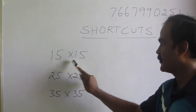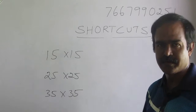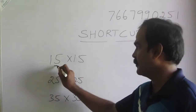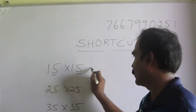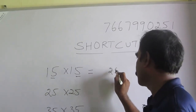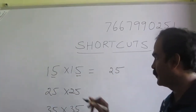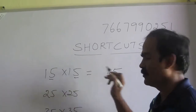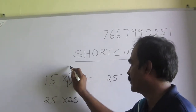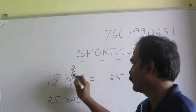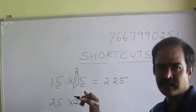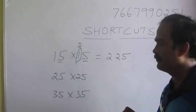15 times 15 — that is 15 multiplied by 15. Just observe this 5 and this 5. What is 5 times 5? 25. So the ending term is 25. Now what will be the first term? Just increase one number here, make this number a 2. So what is 1 times 2? 2. So my answer is 15 times 15 is 225.